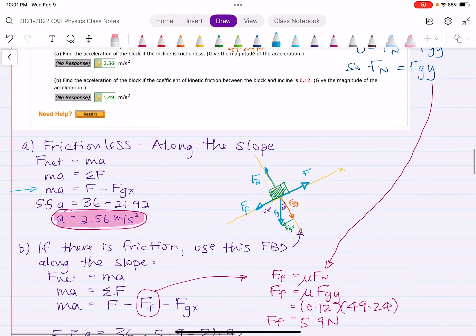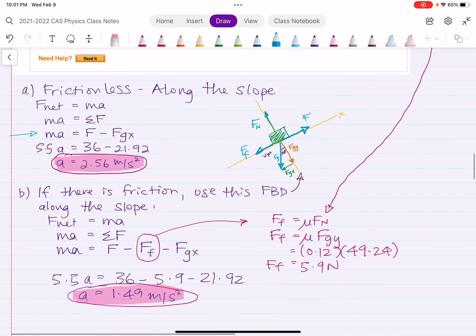And so now there's three forces along the plane. There's the force pulling up, there's the force of friction opposing the motion, and then there's the X component, that green vector, also opposing the motion. So we get this equation, which is, for this problem, MA equals the force minus the force of friction minus the X component of gravity.